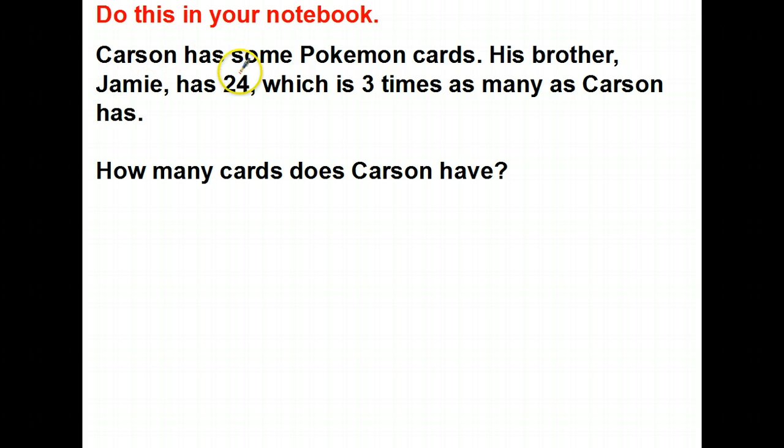Well, we know Carson has some Pokemon cards. The thing is, we don't know how many. His brother has 24, which is 3 times as many as Carson has. So we know that we're comparing it to 24. Okay. There's how many Jamie has. And we know that whatever number Carson has, Jamie has 3 times more. So we know that 3 times some number will give us 24. Well, if I want to solve this and I'm multiplying here, I'm going to need to divide. So 24 divided by 3 equals 8.